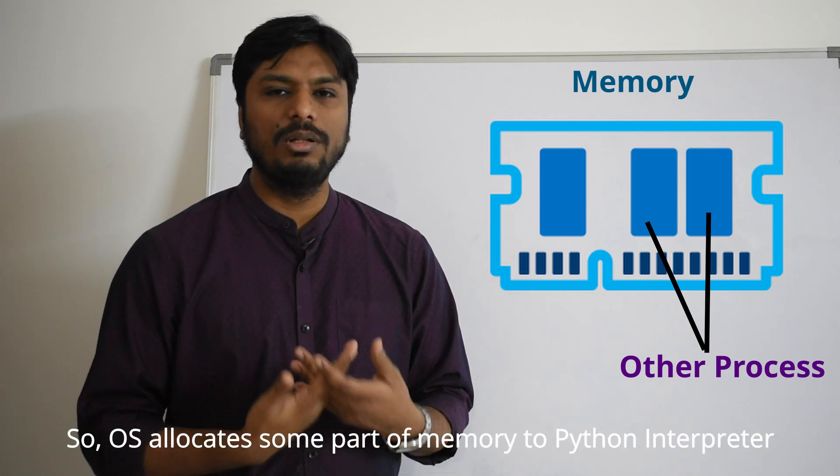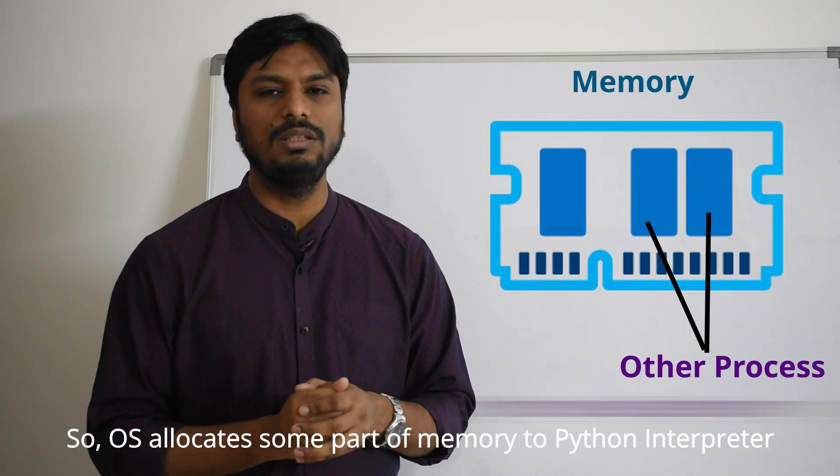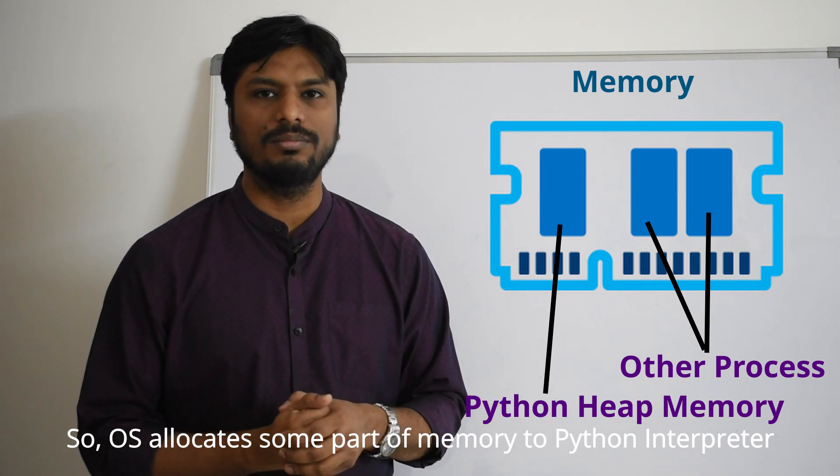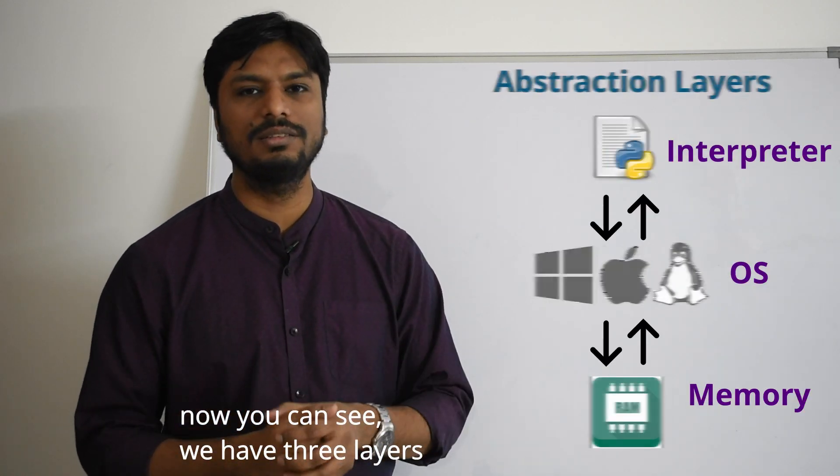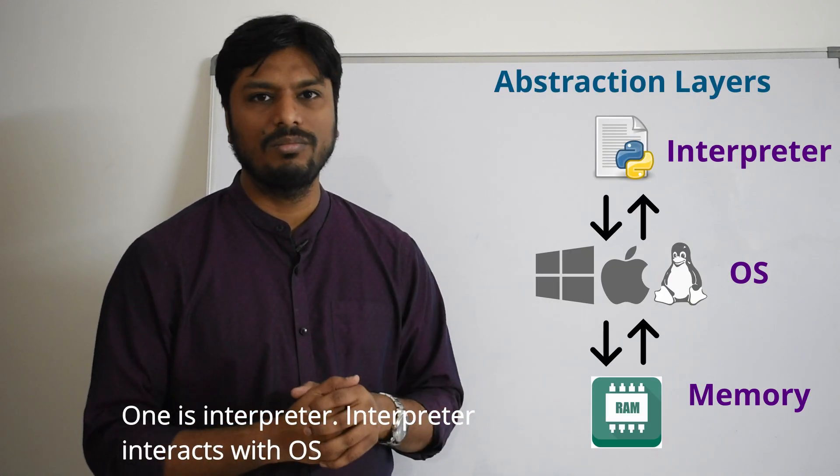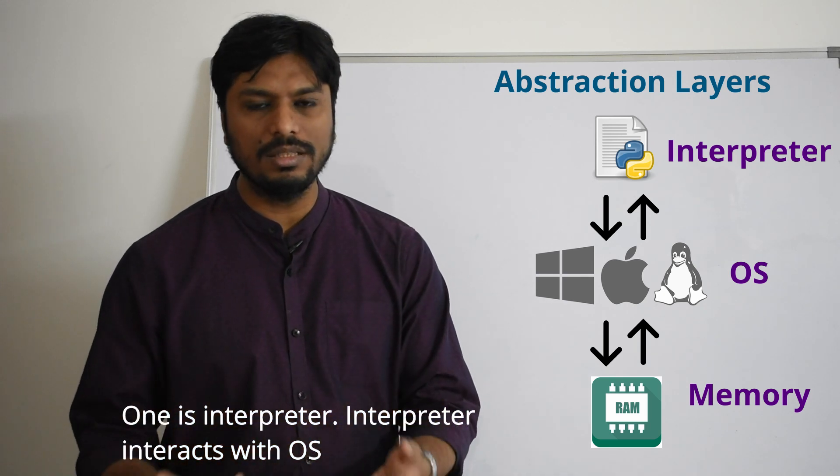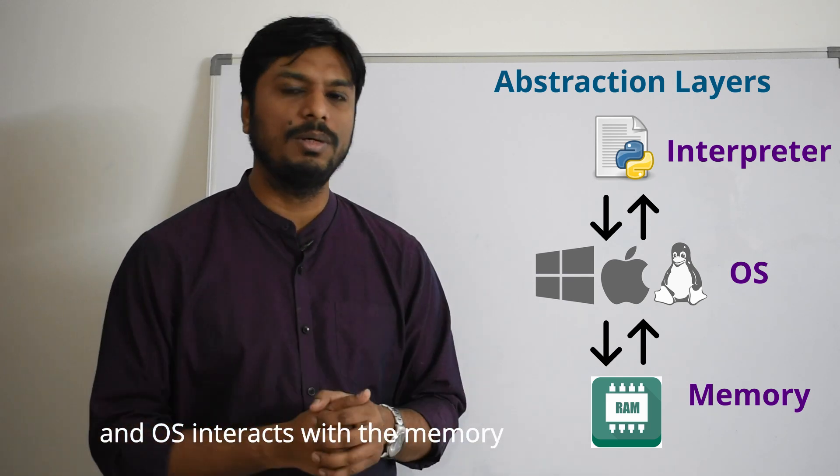So operating system allocates some part of memory to the Python interpreter. That part of memory is called heap memory. Now you can see we have three layers: one is interpreter. Interpreter interacts with operating system and operating system interacts with the memory.